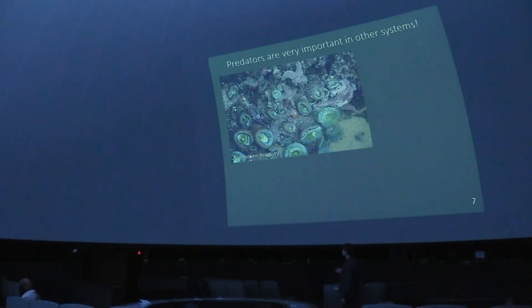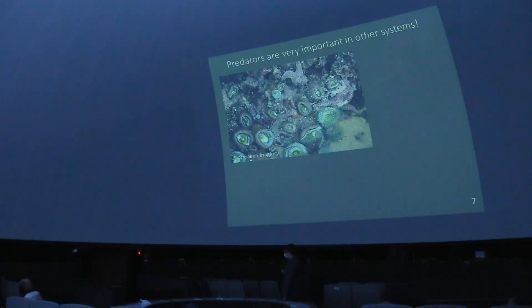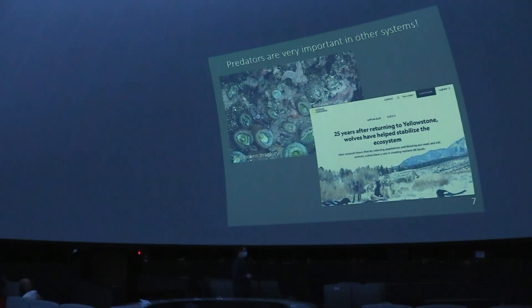I have some ecological background in predator research going back to the 1960s with Robert Payne's work on the west coast. He's at the University of Washington and did experiments in tidal pools where he removed starfish and noticed that diversity in those pools declined. What would happen is the predaceous starfish would be removed, then barnacles and mussels would out-compete everything else and you'd get fewer species — so predators were maintaining the diversity of those tidal pools.